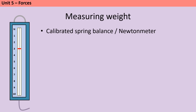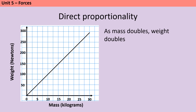Weight can be measured using a piece of equipment called a newton meter. This contains a spring which stretches as a larger force is applied, and this causes a marker to move allowing us to read off the size of the force. An object with a bigger mass also has a bigger weight. In fact weight and mass are directly proportional, so as mass doubles, weight doubles too, and this means if we plot them on a graph we see a straight line which passes through the origin.